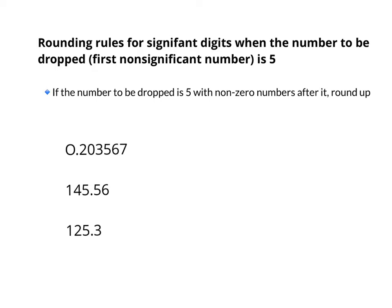If the number to be dropped is 5 with non-zero numbers after it, you round the previous number up. So if we round this first number to 3 significant digits, it would be 0.20. The first number to be dropped is a 5, and there are non-zero numbers after it, so we round it up — so that would become a 4.